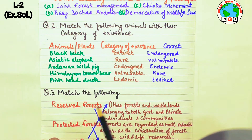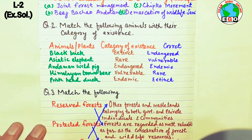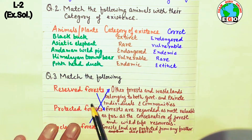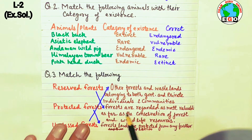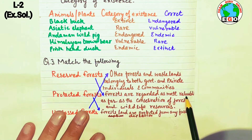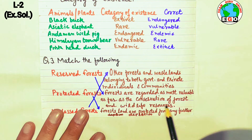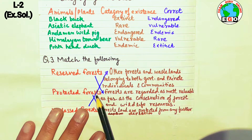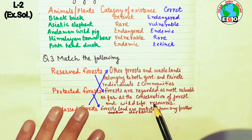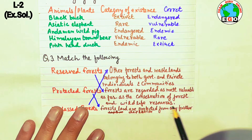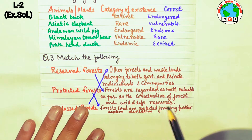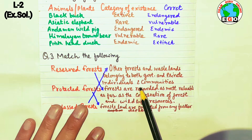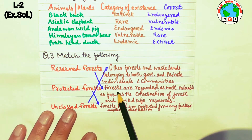Next: match the following — reserve forest, protected forest, unclassed forest. Reserve forests are regarded as the most valuable as far as the conservation of forest and wildlife resources is concerned. Reserve forests are most valuable and very useful for the conservation of forests and wildlife resources.